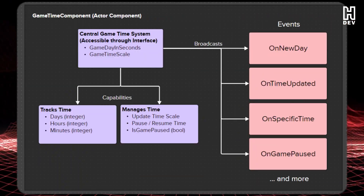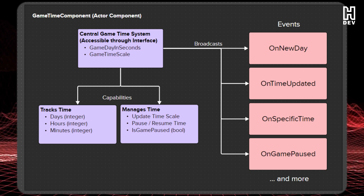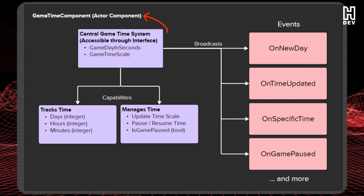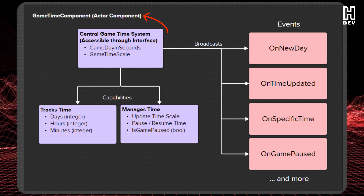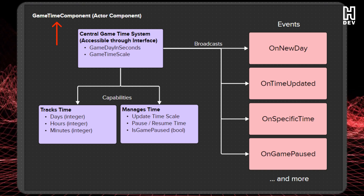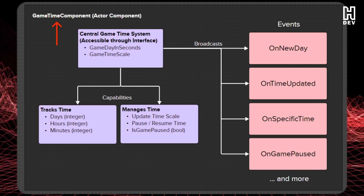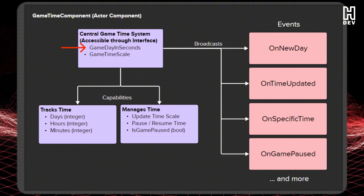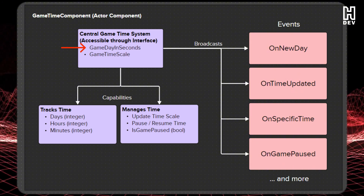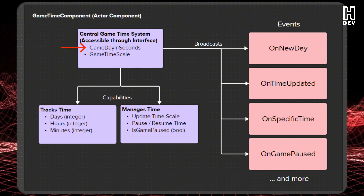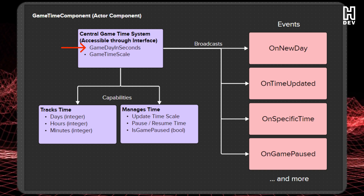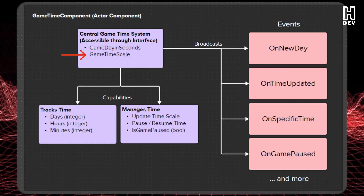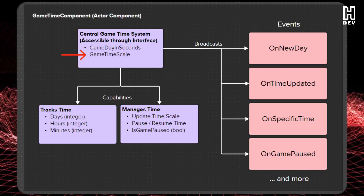We want to create a modular component that can be reused, and the best way to do this is by using an actor component — we call this our game time component. The component will have a couple of basic settings: the game day in seconds, which is how long an in-game day will last in real-world time, and a variable called game time scale, which will be used to speed up and slow down our in-game time.